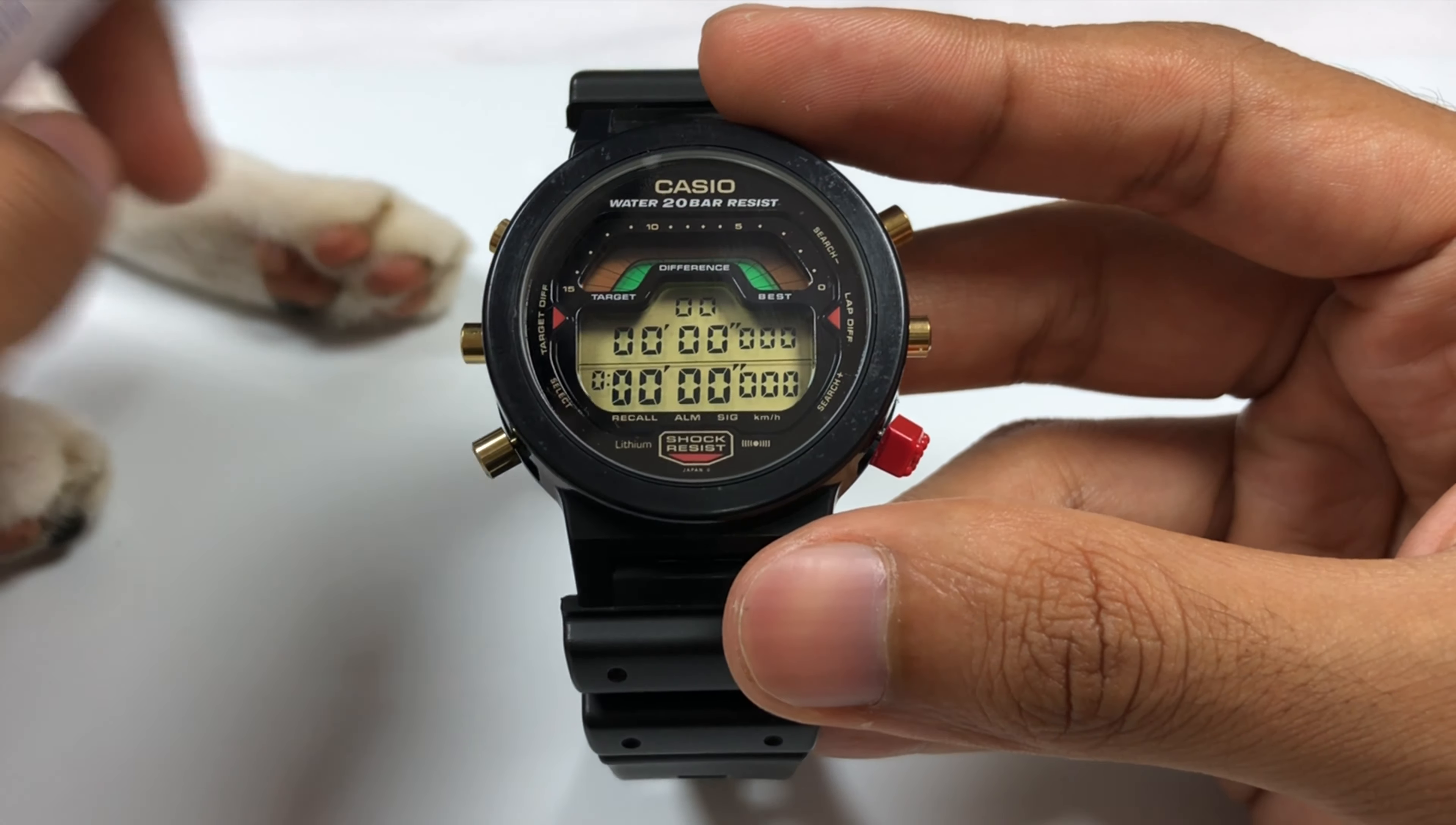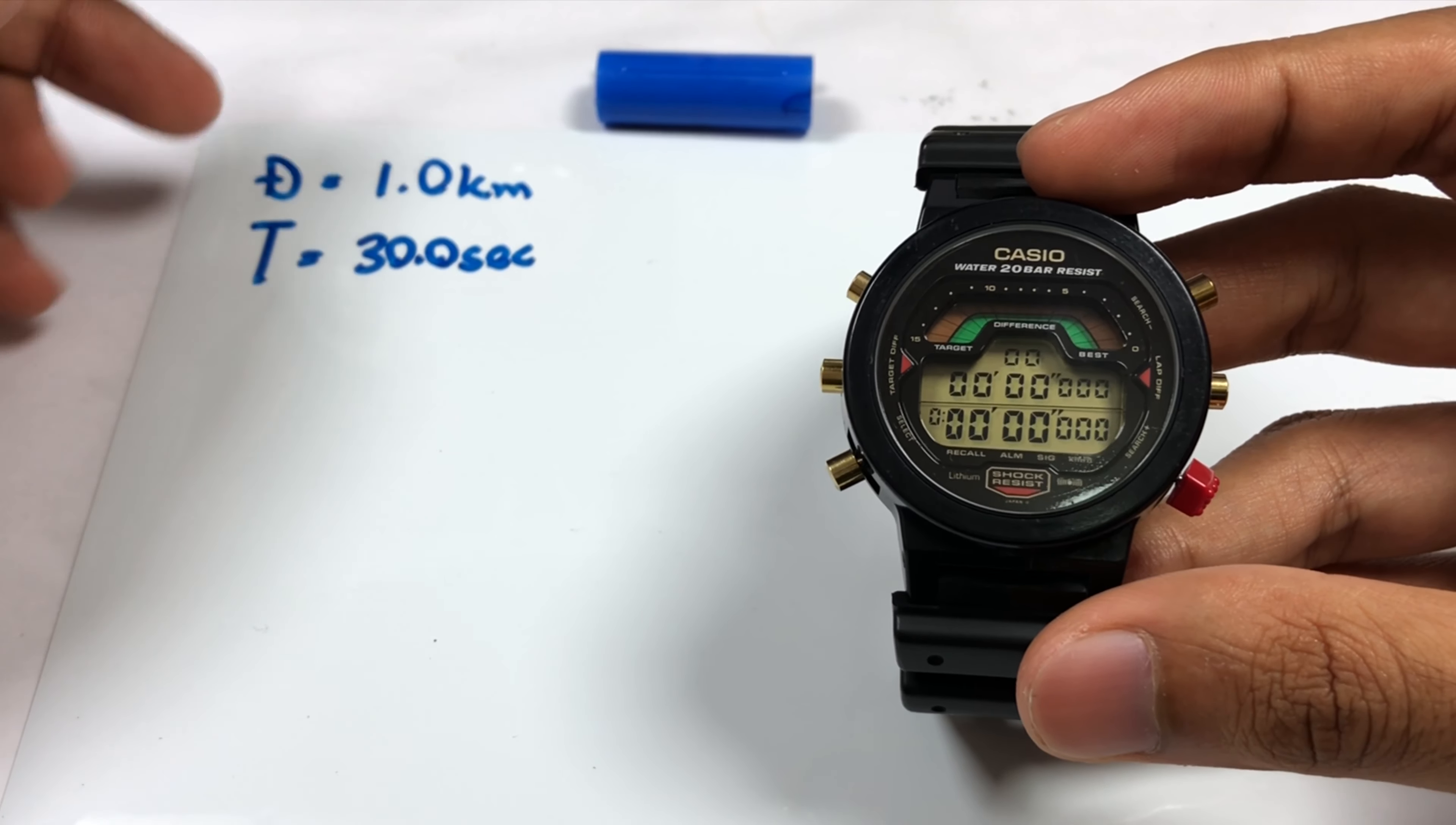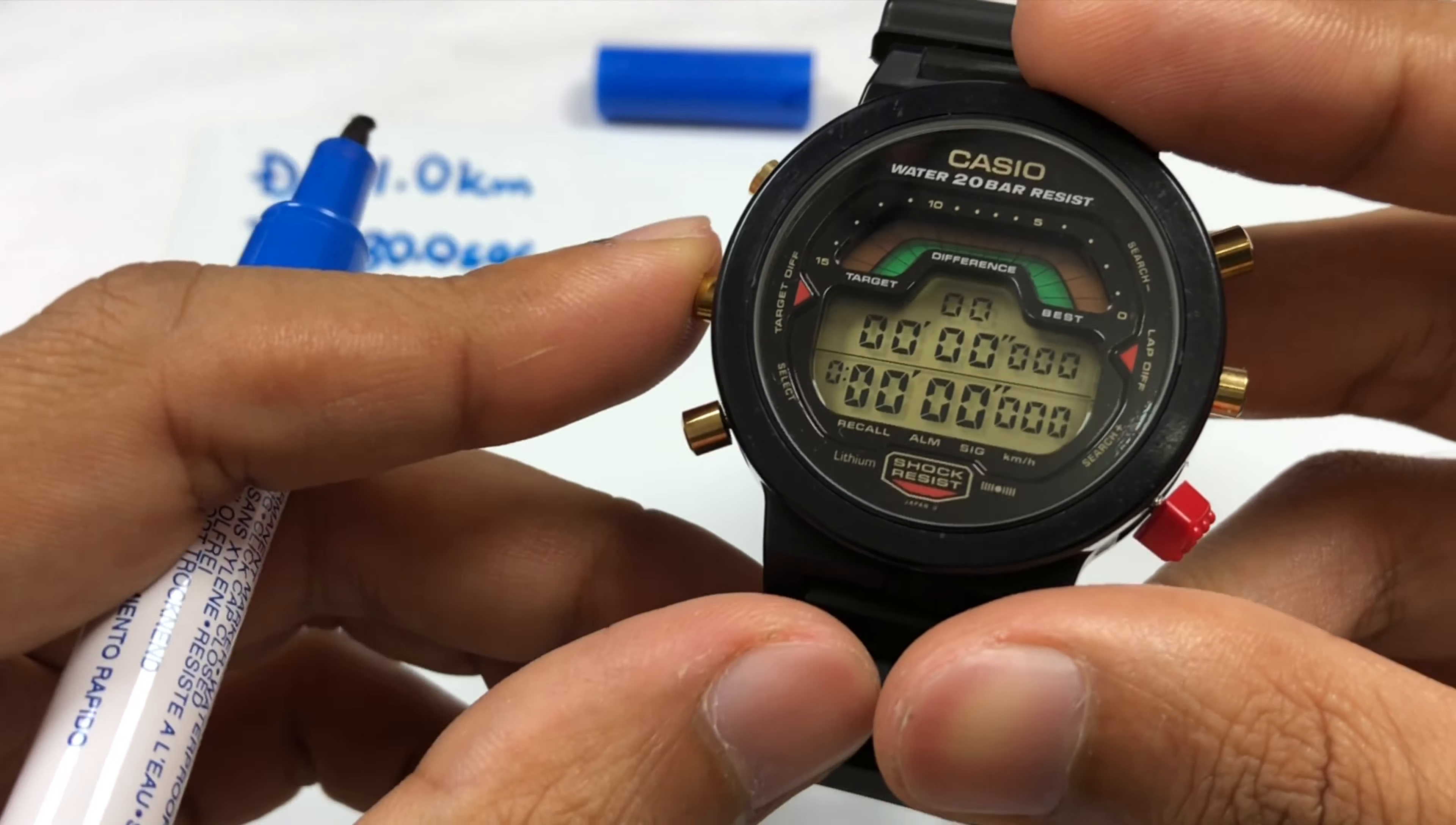Press adjust and we are good to go. Now we have two information stored in the watch. I'm going to write it down. We have our distance information which is 1.0 kilometers, and our target time information which is 30.0 seconds. The watch can calculate speed using these two: speed equals distance divided by time, which equals 120.0 kilometers per hour.